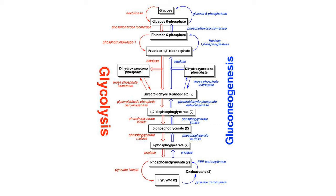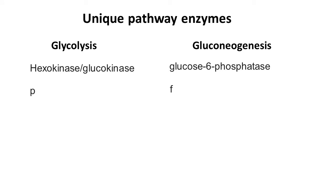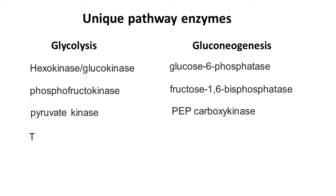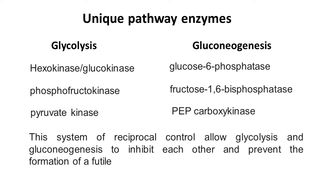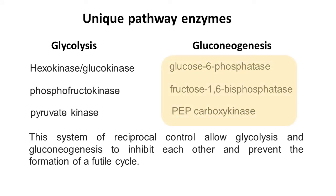In glycolysis there are three highly exergonic steps: step 1, 3, and 10. These are also regulatory steps which include the enzymes hexokinase, phosphofructokinase, and pyruvate kinase. Biological reactions can occur in both the forward and reverse orientation, but if the reaction occurs in reverse, the energy normally released in the forward orientation is now required. If gluconeogenesis were to simply occur in reverse, the reaction would require too much energy. Nature has therefore evolved three other enzymes to replace hexokinase, phosphofructokinase, and pyruvate kinase during gluconeogenesis.